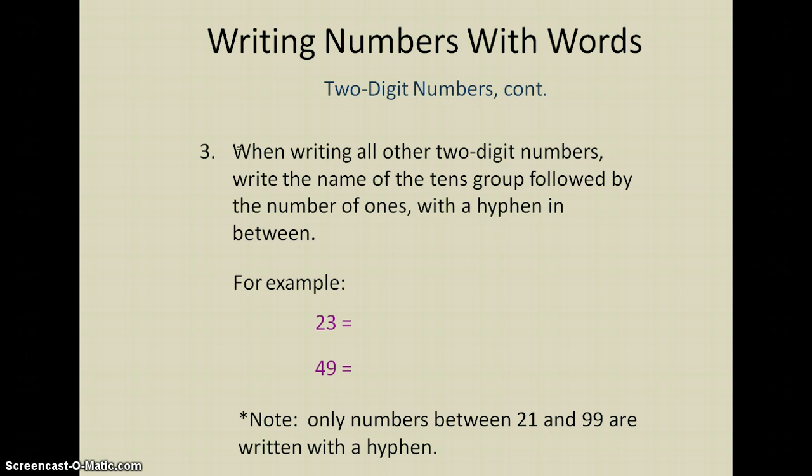So what we mean by that is if I'm going to write the number 23 in words, I have two tens and the name for a group of two tens is 20, and then I'm going to put a hyphen and then the number of ones that I have is three ones. So I would write out 23 in words just like I would say it.